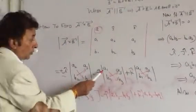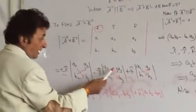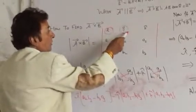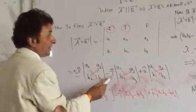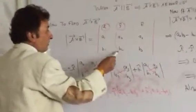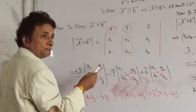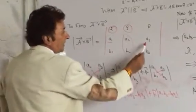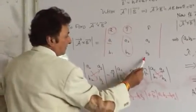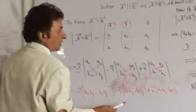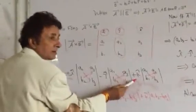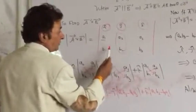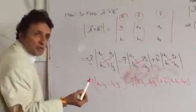You must know how to isolate: for j cap, that column is absent — what is left is a1, a3, b1, b3. We put k cap here: a1, a2, b1, b2.